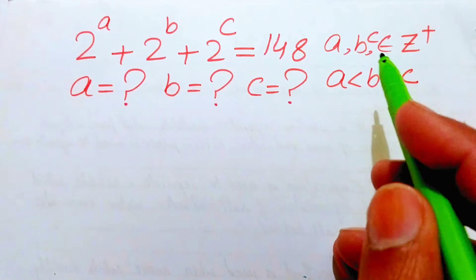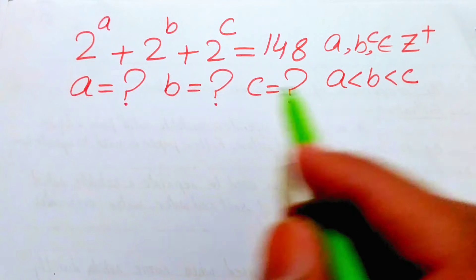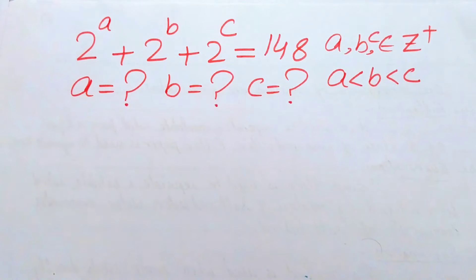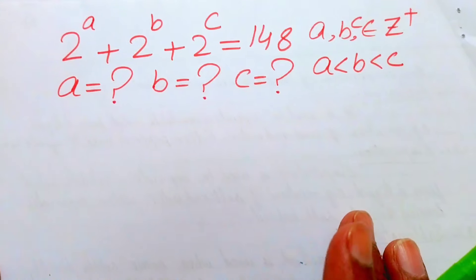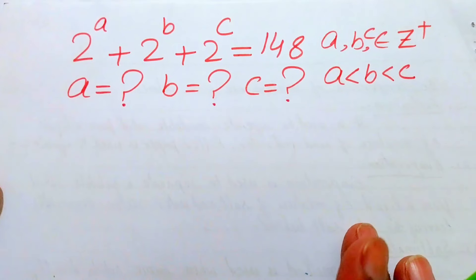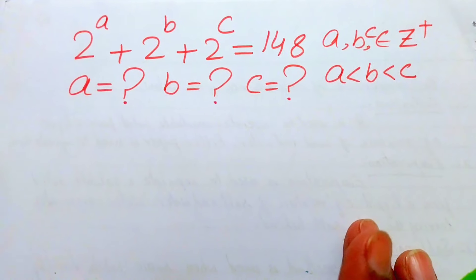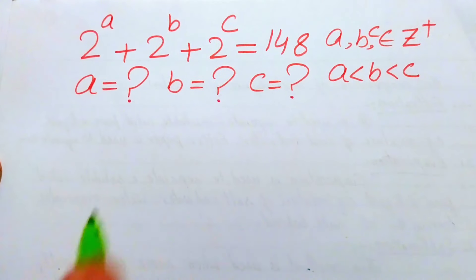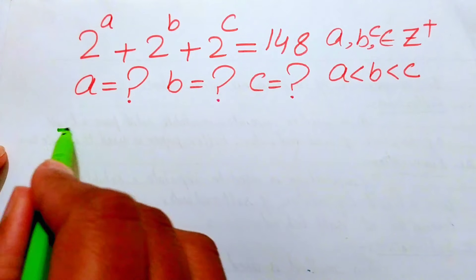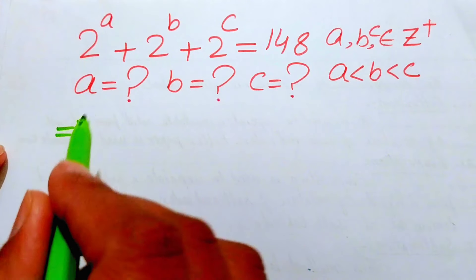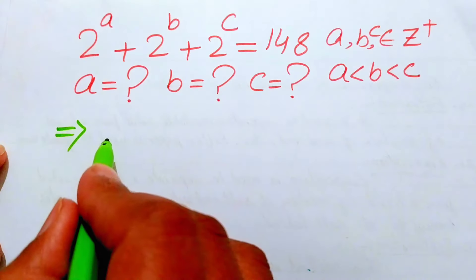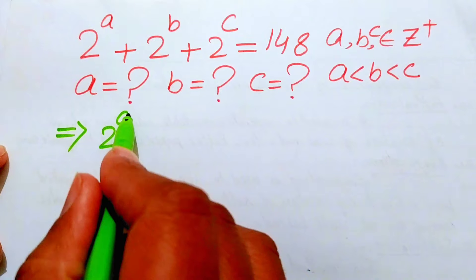According to this condition we can find the values of a, b and c. The very first thing we are going to do is multiply and divide the left-hand side of this equation by 2 to the power of a.